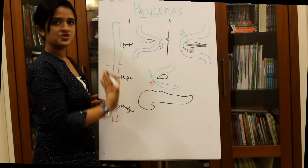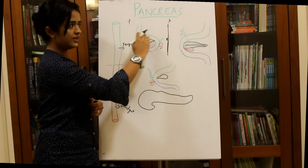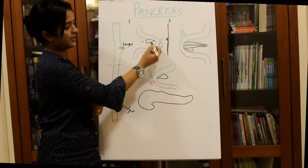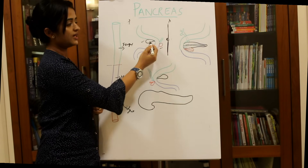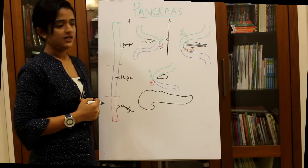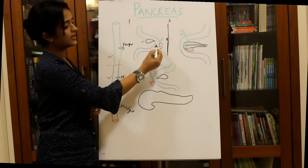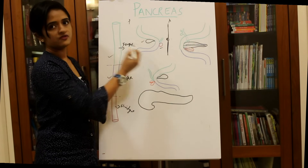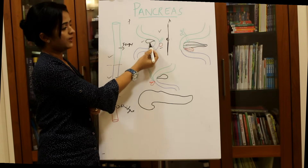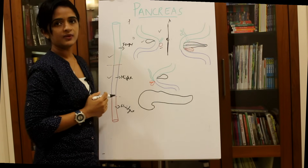In a sagittal section, the anterior abdominal wall and umbilicus are visible, with a loop formed by part of the foregut and midgut. Two buds arise from the ventral and dorsal aspects of this C-shaped loop. This C-shaped loop gives rise to the duodenum, which is derived from both foregut and midgut. The part closer to the anterior abdominal wall is the ventral part, and the part facing posteriorly is the dorsal part.